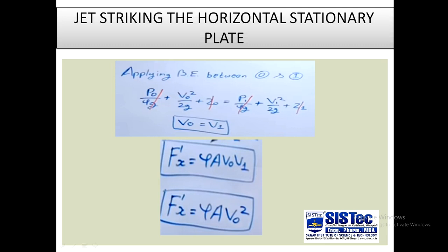The topic of jet striking a horizontal stationary plate is now complete. The force exerted by the jet on the plate is F'x = ρ·A·v₀², where v₀ is the jet velocity from the nozzle, ρ is the density of water (1000 kg/m³), and A is the jet cross-sectional area = (π/4)d².